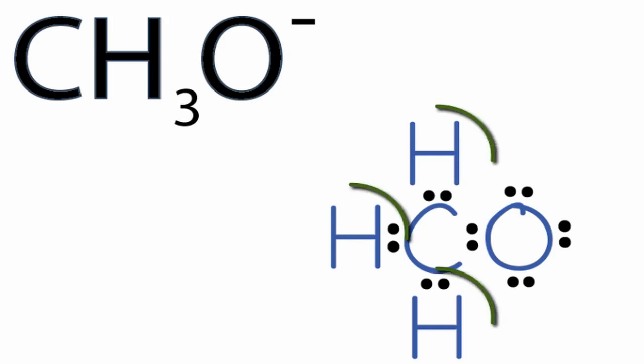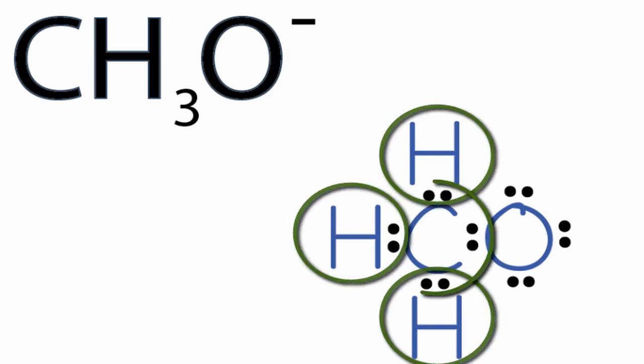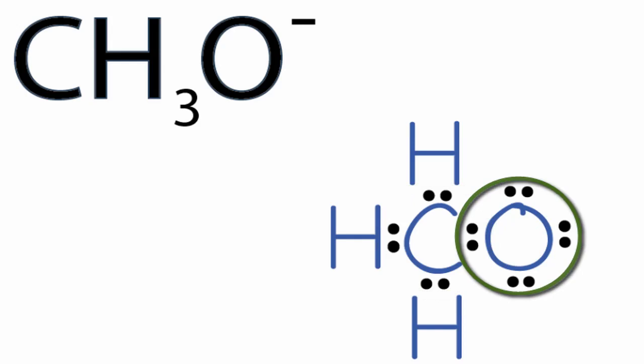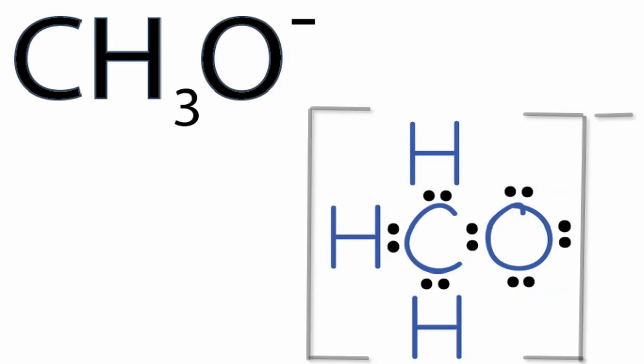Each hydrogen atom has two valence electrons with full outer shells. The carbon has eight valence electrons with an octet, and the oxygen also has an octet. One last thing we need to do is put brackets around our Lewis structure for CH3O- to show that it's an ion and has a negative charge. That's the Lewis structure for CH3O-.